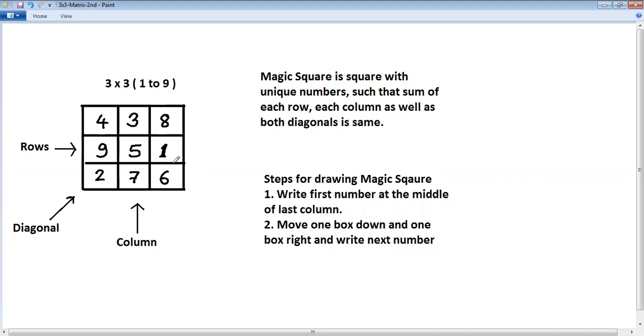So magic square of 3 by 3 is ready. Let's check and confirm that it satisfies this rule. 4 plus 3, 7 plus 8, 15. 9 plus 5, 14 plus 1, 15. 2 plus 7, 9 plus 6, 15.